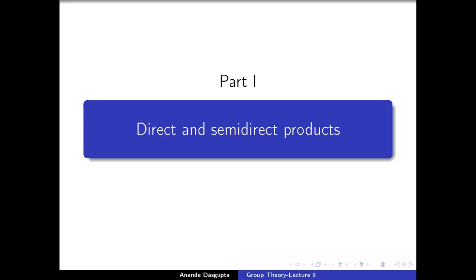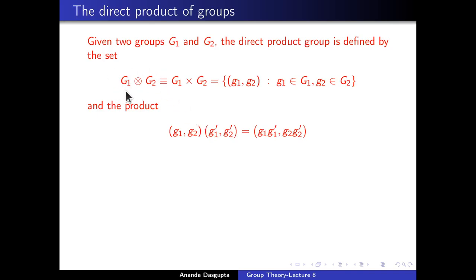Let us start with the simpler of the two notions, that of the direct product. When we describe a group, what we have to do is describe both the set underlying the group and the operation which describes multiplication in that group. Given two groups G1 and G2, let us describe the direct product G1 ⊗ G2 by first describing the underlying set and then talking about the operation carried out in this direct product group. The underlying set is really very simple — it is just the Cartesian product of the two underlying sets G1 and G2.